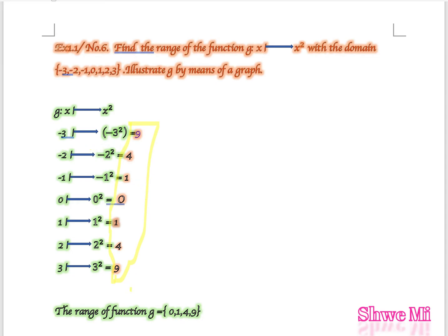So the range of function G is {0, 1, 4, 9}.